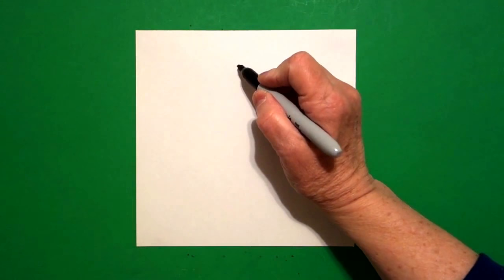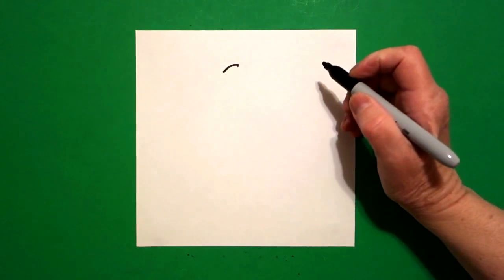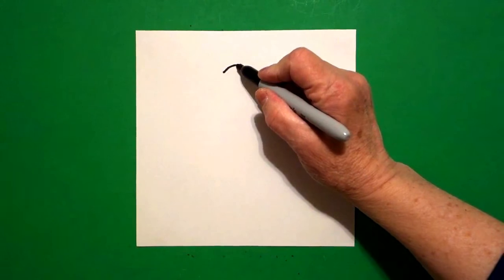And from that dot, I'm going to draw a slightly curved line down on the left, come back to the dot, slightly curved line down on the right.